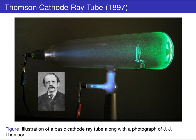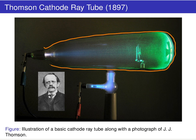A cathode ray tube is basically an evacuated chamber. He's got a heat source that breaks apart parts of the atom and creates a little ray of particles going down the center, and a detector screen where they impact.